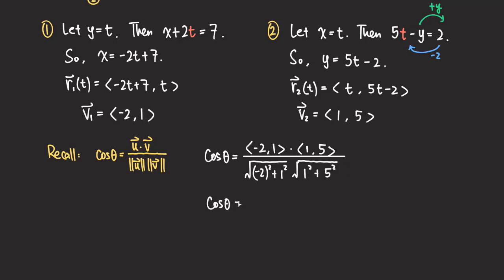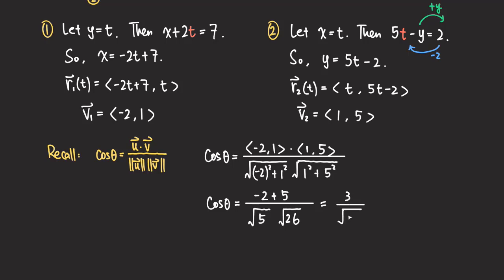Computing the dot product: negative 2 times 1 plus 1 times 5 gives negative 2 plus 5 equals 3. For the denominator: negative 2 squared plus 1 squared is 4 plus 1 equals 5, so the first magnitude is root 5. Then 1 squared plus 5 squared is 1 plus 25 equals 26, so the second magnitude is root 26. The denominator is root 5 times root 26, which is root 130. So cosine theta equals 3 over root 130.